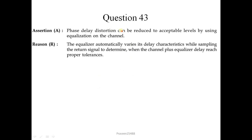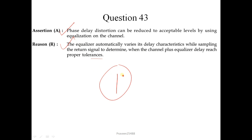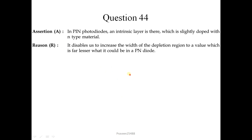Question number 43: Phase delay distortion can be reduced to acceptable levels by using equalization on the channel — this is correct. The equalizer automatically varies its delay characteristics while sampling the return signal to determine when the channel plus equalizer delay is within proper tolerance — this is also correct and is the correct explanation of the assertion. So the correct answer is option 1.